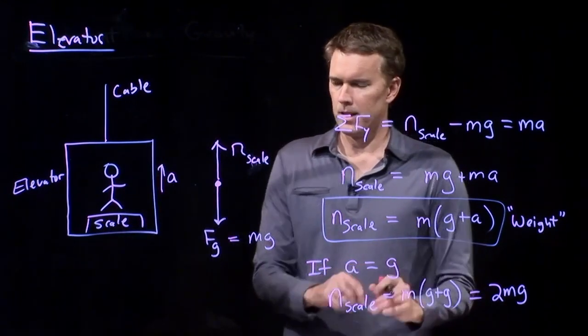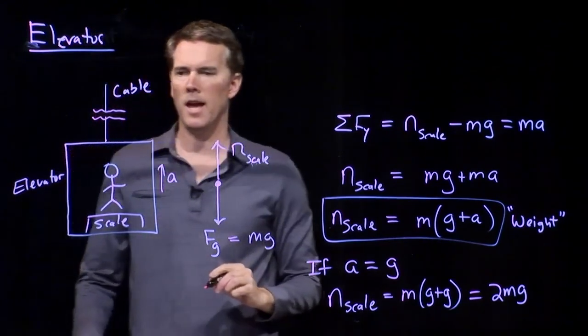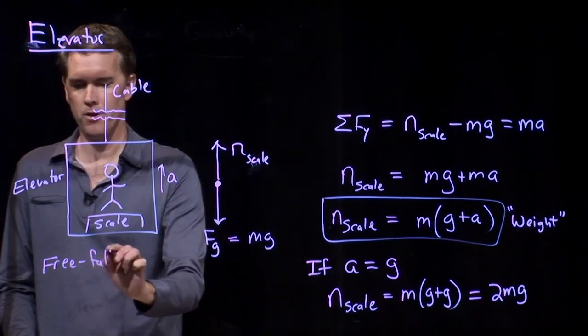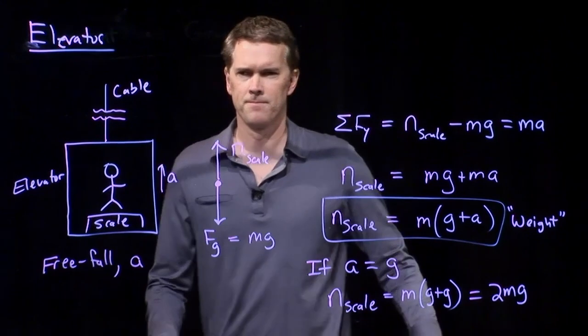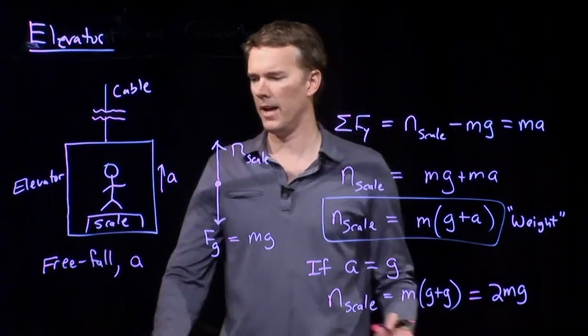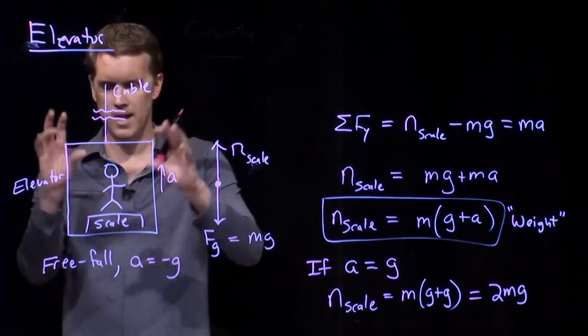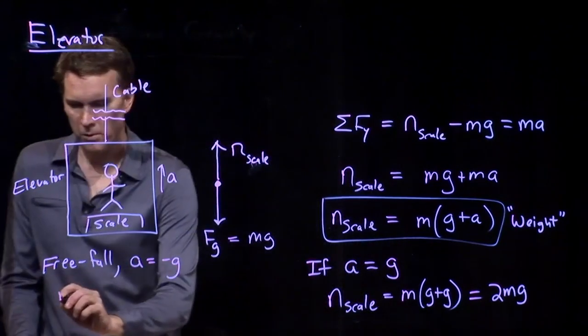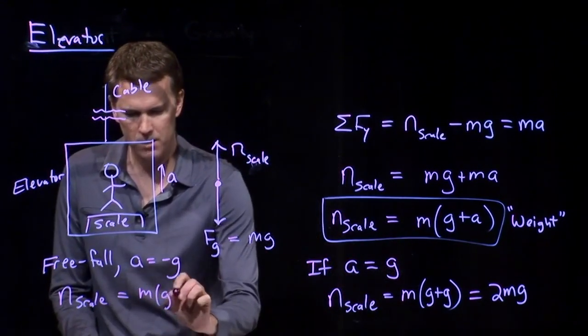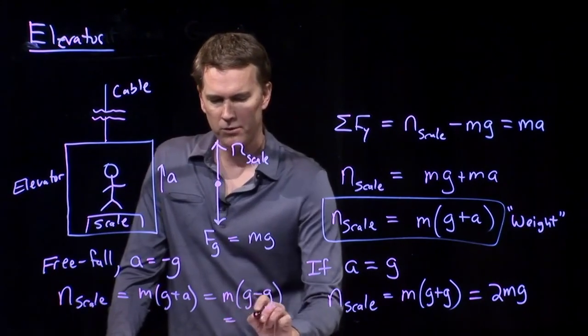Let's look at the other extreme. Let's say that we cut the cable. If we cut the cable, break it in half, and now all of a sudden this thing is falling, then we are in free fall. What is our acceleration? Negative g. The elevator is falling at negative g. The scale is falling at negative g. I am falling at negative g. Everything is falling at negative g. So what do we get for the force of the scale pushing up on us? Well, it is right here. m times g plus a. And we just said a was negative g. So we get m times g minus g, which is, of course, zero.